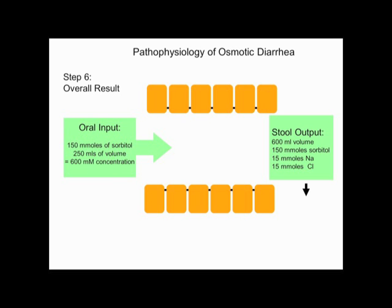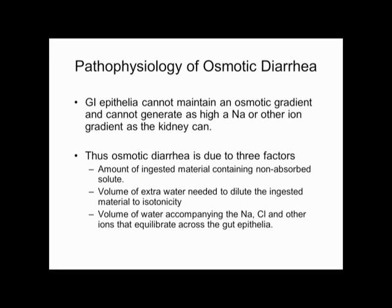Unlike the kidney, which has a tight epithelium, high gradients, and a counter-current loop of Henle, the gut cannot maintain a high osmotic or sodium gradient. Osmotic diarrhea depends on three factors: how much ingested non-absorbable solute you took in, how much water was added to make it isotonic, and how much sodium and chloride diffused in and couldn't be retrieved.